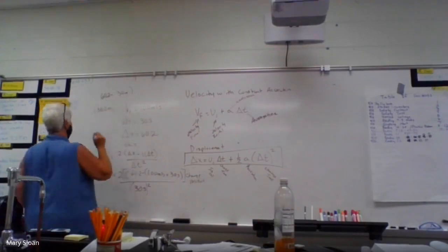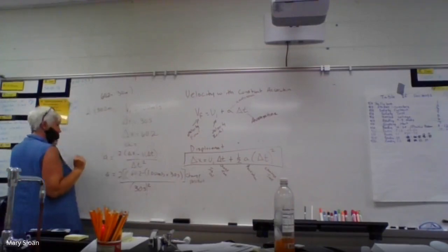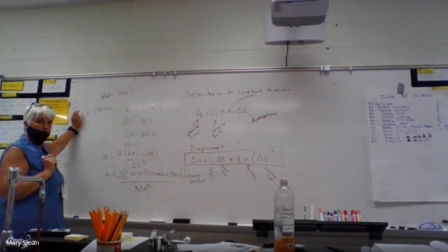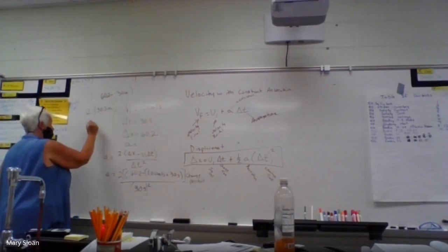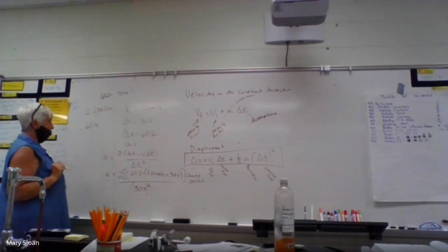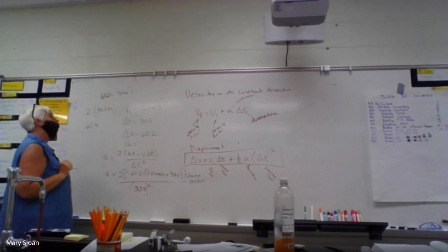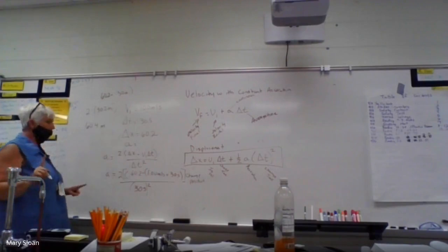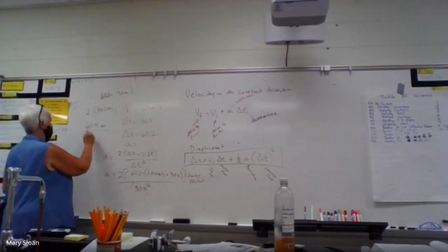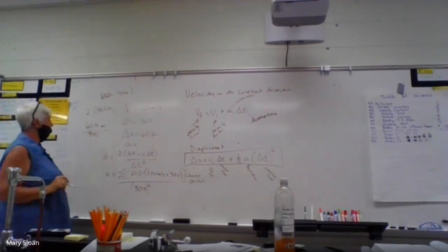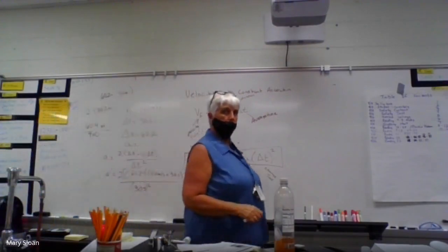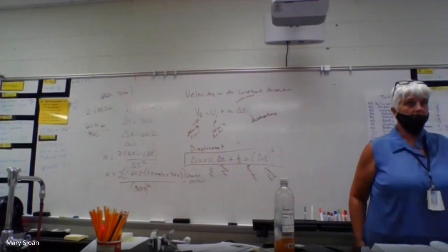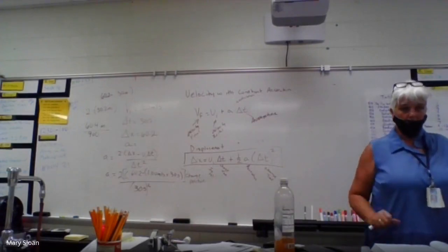What answer do we get now? 60.4. What's my units? Meters. Now we're going to do 30 squared. What is that answer? 900. Now take 60.4 and divide it by 900 and see what you get. So guess what? Your answer's right. The book's wrong.